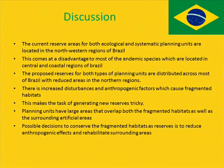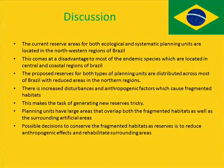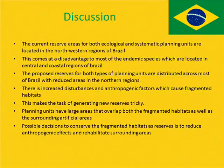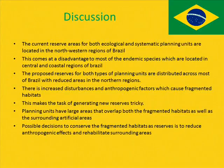The proposed reserves for both types of planning units are distributed across most of Brazil with reduced areas in the northern regions. Most species are located in the central and coastal regions — the same regions of artificial land uses — thus there is increased disturbance and anthropogenic factors causing damaged and fragmented habitats. Because of the fragmented habitats being located between vast artificial land cover, this makes generating new reserves tricky, as both planning unit types have large areas overlapping fragmented habitats as well as surrounding artificial areas.